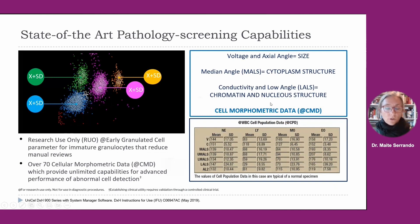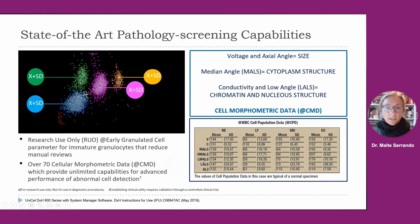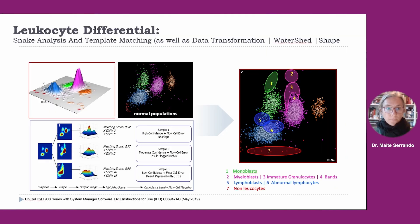All these combinations can be summarized in a table available on the DXH 900 screens. For each cluster of cells — neutrophils, lymphocytes, monocytes, and eosinophils — we have all these measurements with the mean and standard deviation for each cluster measured. For the leukocyte differential analysis, we have a combination of two algorithms: the snake analysis and template matching.